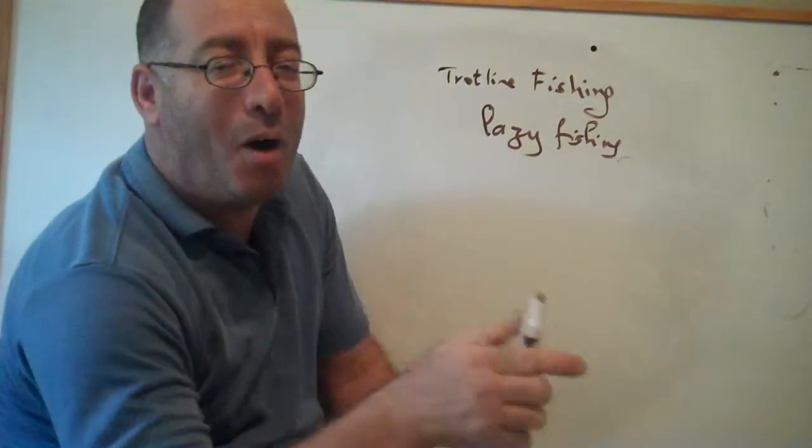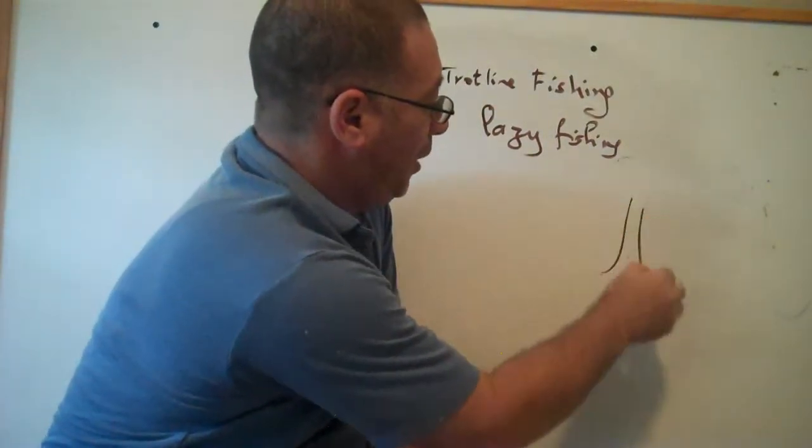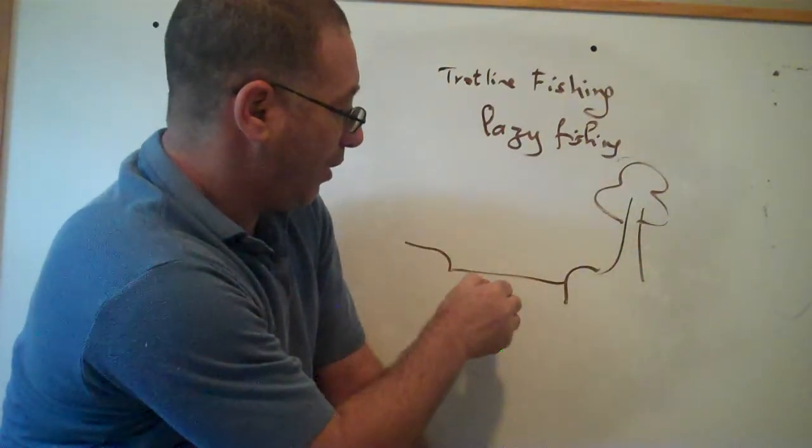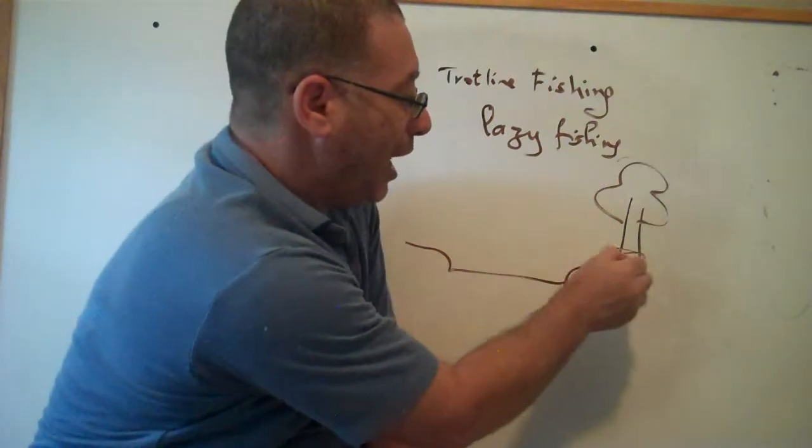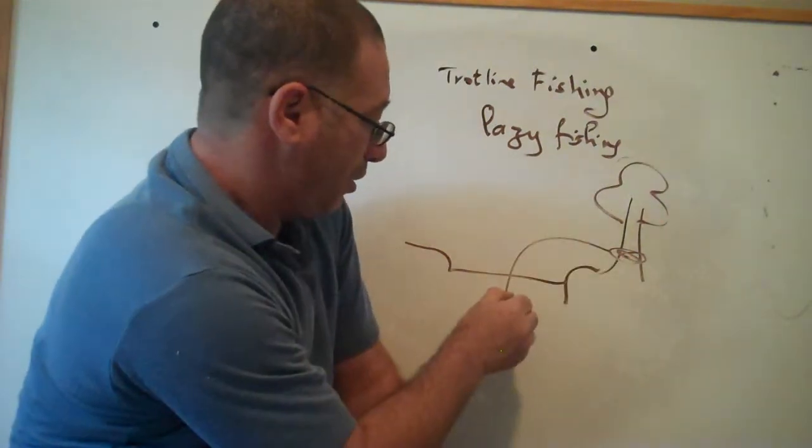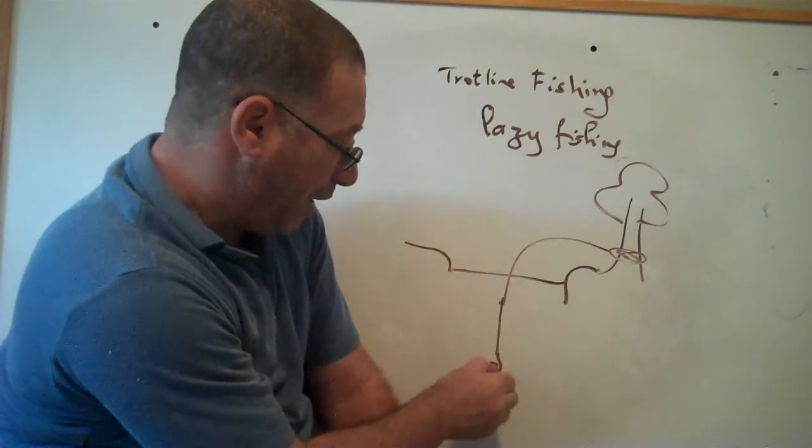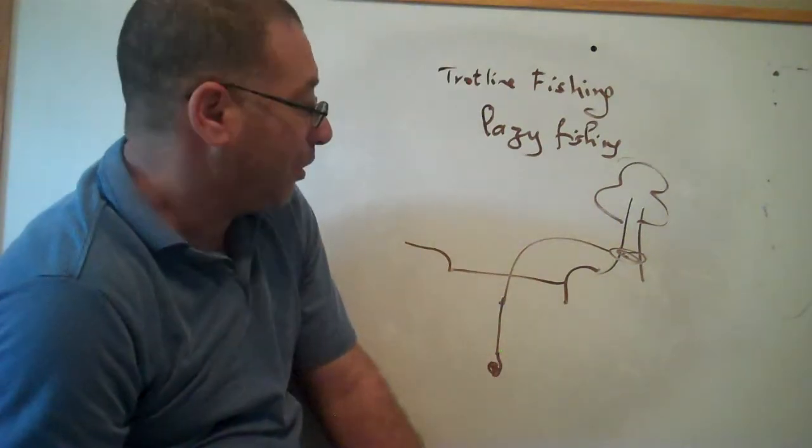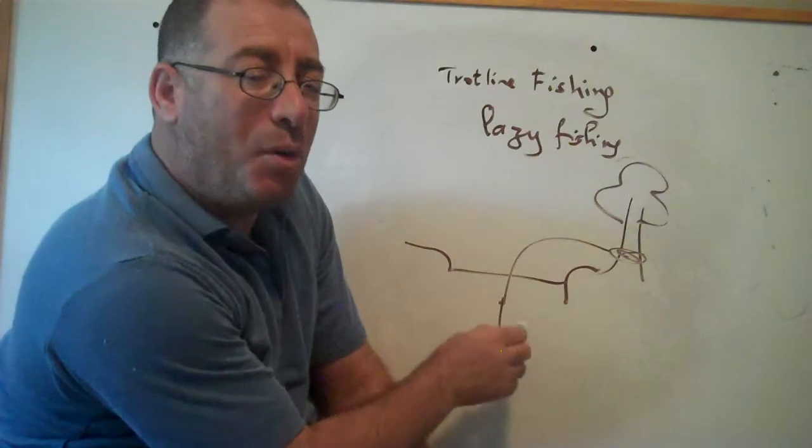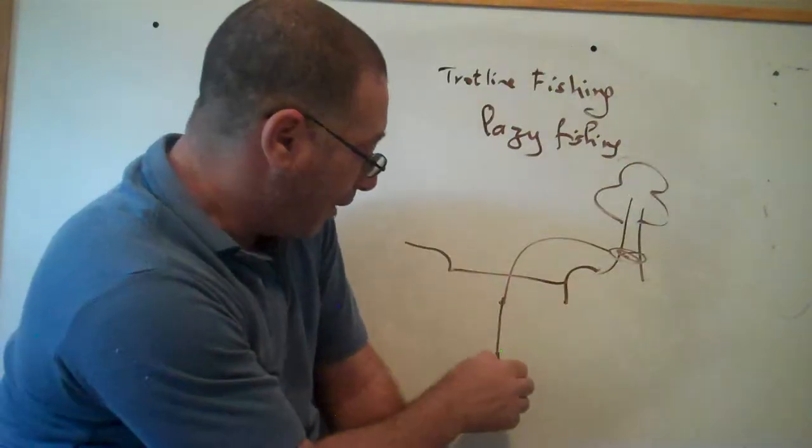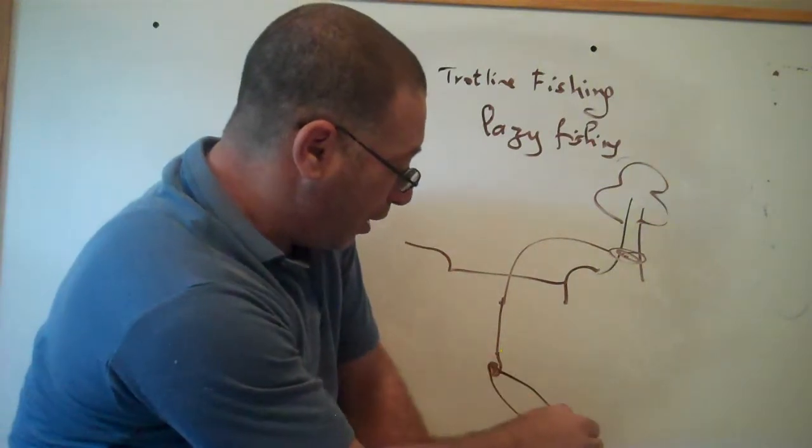Some people use only one line. First, you have a tree here, a very big tree. Here is the river. They attach a line like this and throw it. This line has the hook with a bait. So you throw it today in the morning, and the afternoon or next day you come, and hopefully you find a big fish.